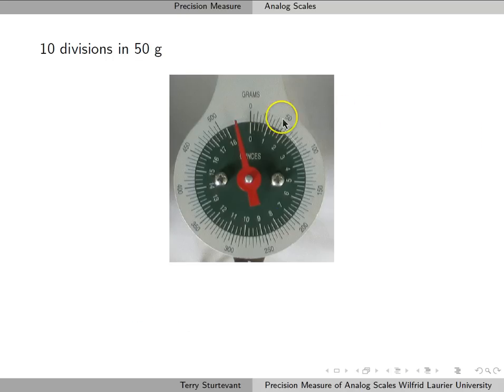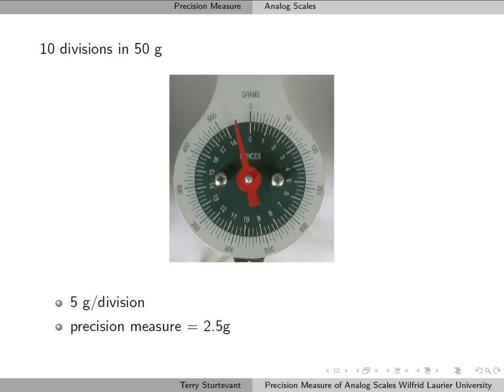With this second spring scale, we see we have 10 divisions in 50 grams, which means it's 5 grams per division, so the precision measure is half of that — 2.5 grams.